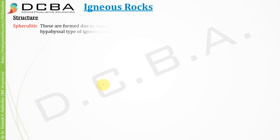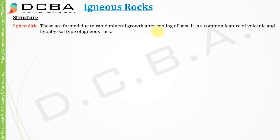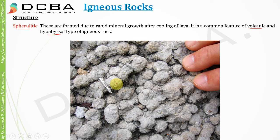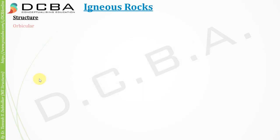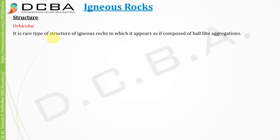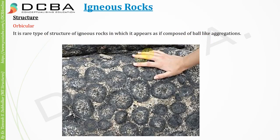Next is spherulitic structure. These are formed due to rapid mineral growth after cooling of lava. It is a common feature of volcanic and hypabyssal types of igneous rocks. Next is orbicular structure. It is a rare type of structure of igneous rock in which it appears as if composed of ball-like aggregations.